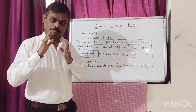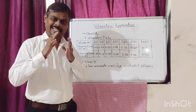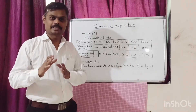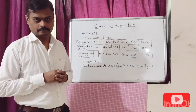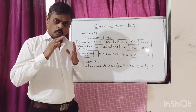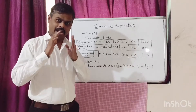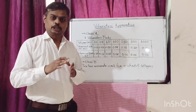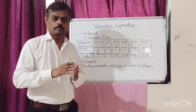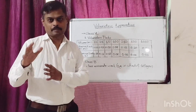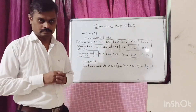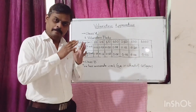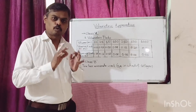Volumetric apparatus is an integral requirement for quantitative estimation done in the laboratory. The accuracy and precision of results is greatly dependent upon the use and selection of appropriate volumetric apparatus for analysis. The volumetric apparatus are made up of borosilicate glass.